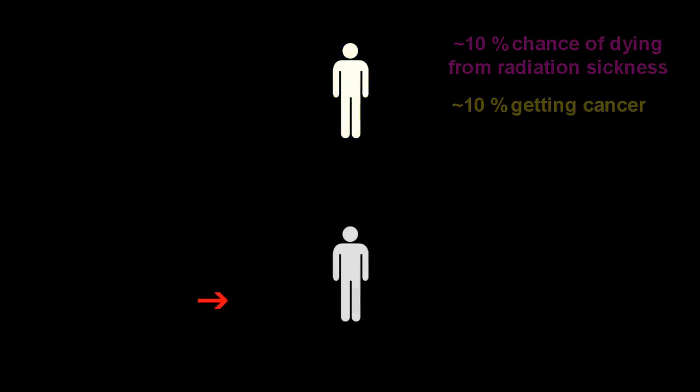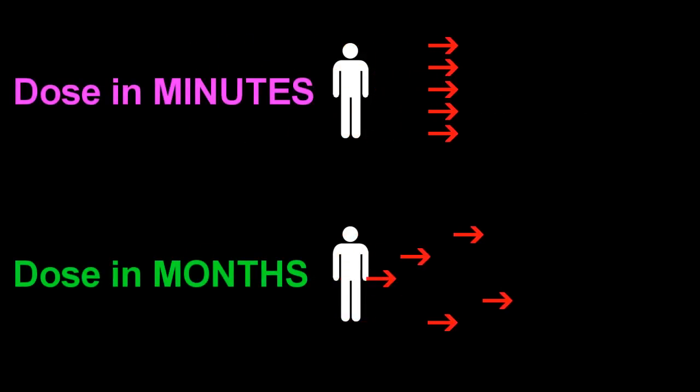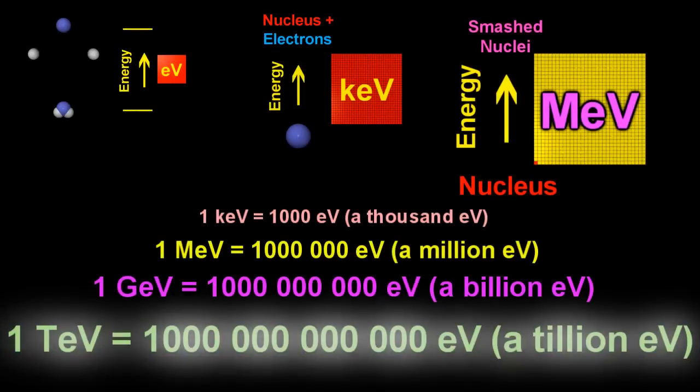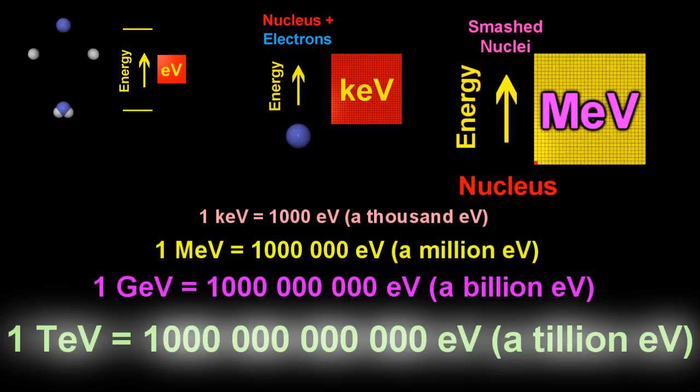Obviously, if the dose is over a longer period of time, then there is essentially no hazard from the radiation sickness. But the chances of getting cancer stay exactly the same. Right, so now you know how radiation does damage. So, what will a trillion electron volt, that's a tera electron volt proton, do when it hits you?